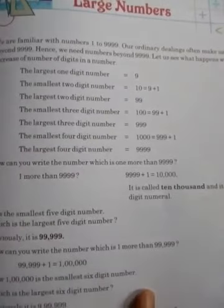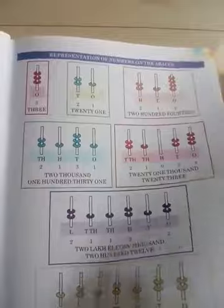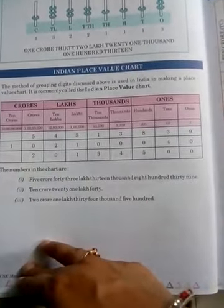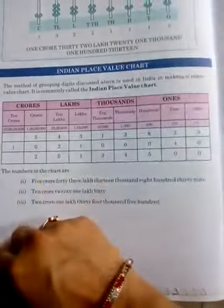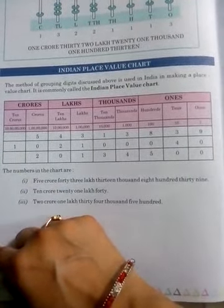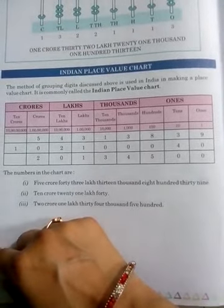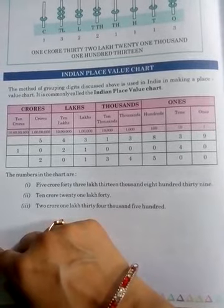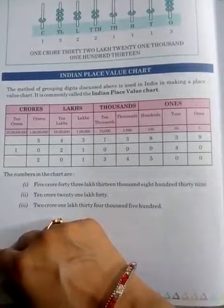First of all, on the very first page, I want you to draw the Indian Place Value Chart — only the chart without numbers, that pink chart. You have to draw it in your copy. That means: ones, thousands, lakhs, crores. The place values are: ones, tens, hundreds, thousands, ten thousands, lakhs, ten lakhs, crores, and ten crores.